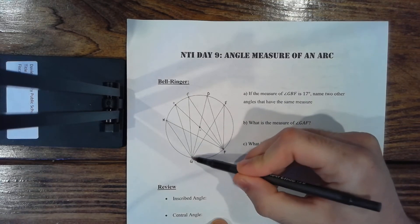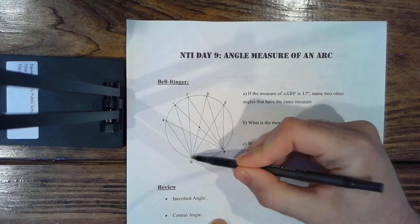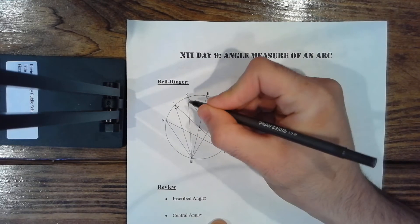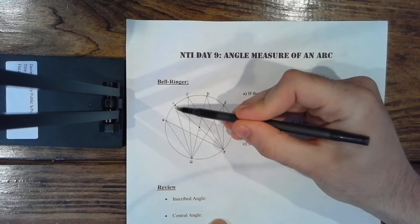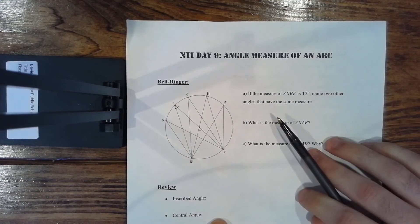So part A says if the measure of angle GBF, so you start at G, go to B, and then finish at F, so GBF, that's going to be this angle right here. If GBF is 17 degrees, so if this angle right here is 17 degrees, name two other angles that have the same measure.